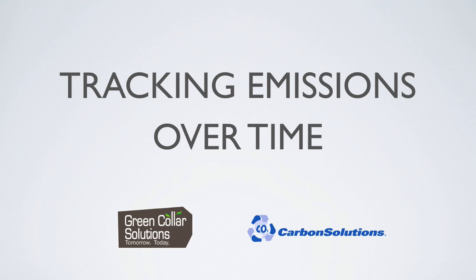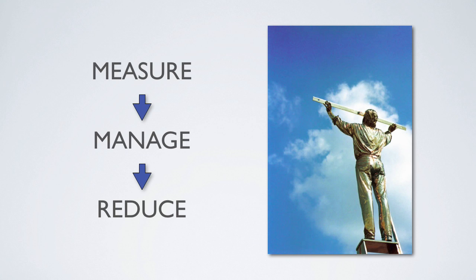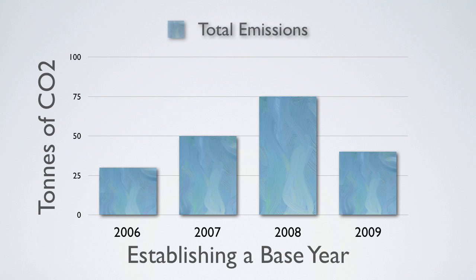Tracking Emissions Over Time: an Overview. Generally, when companies begin measuring their greenhouse gas emissions, they do so with the intent of managing and reducing these emissions. In order to track their progress over time, companies must choose a base year — a reference year against which future emissions will be compared.